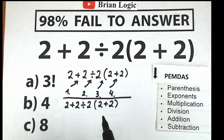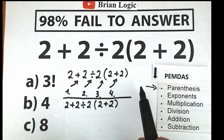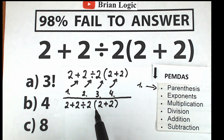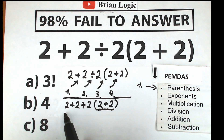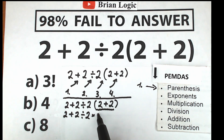Now let's scan what elements we have. First, I see parentheses, and parentheses is the first step in PEMDAS — higher position means higher priority. So we first evaluate the expression inside the parentheses. We have 2 plus 2 inside, which equals 4. So we now have: 2 plus 2 divided by 2, times 4.